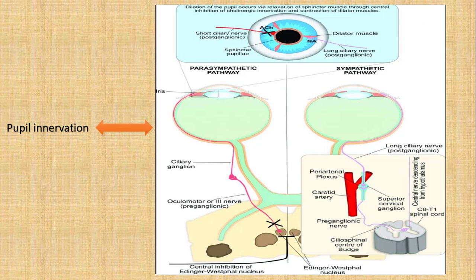We also have a sympathetic pathway that originates from the superior cervical ganglia. We also have the carotid plexus, and after that we have the postganglionic sympathetic pathway, known as the long ciliary nerve or postganglionic nerve. I will talk about these in more detail in another slide.